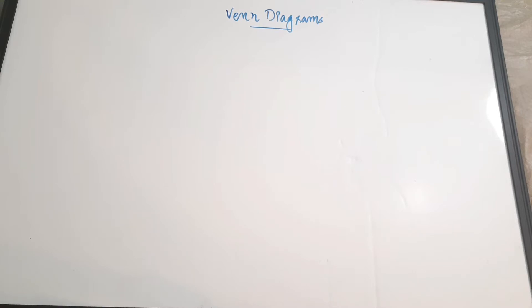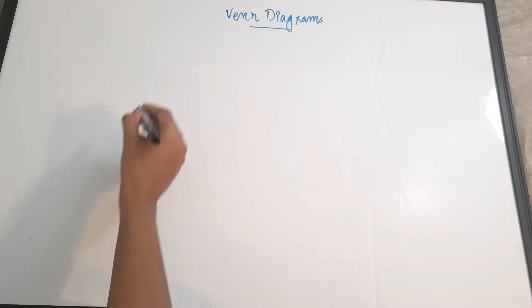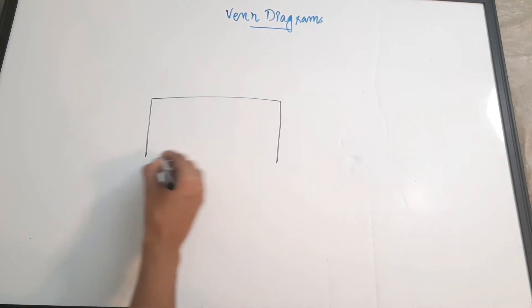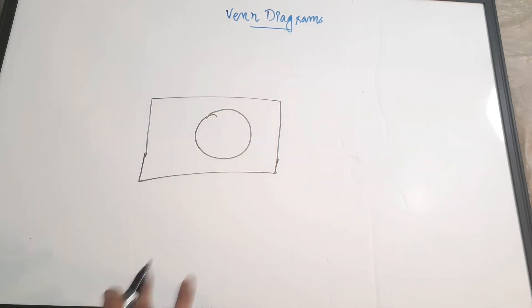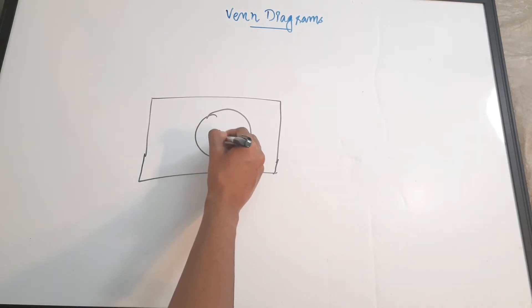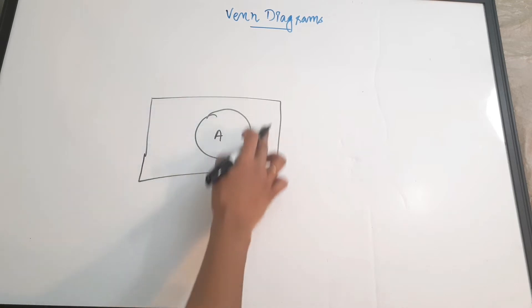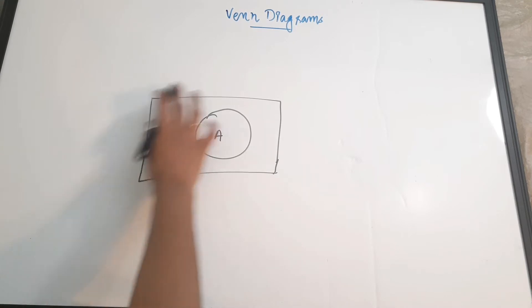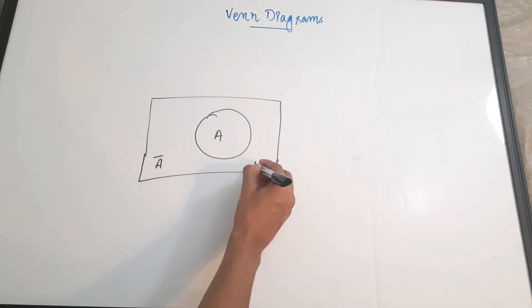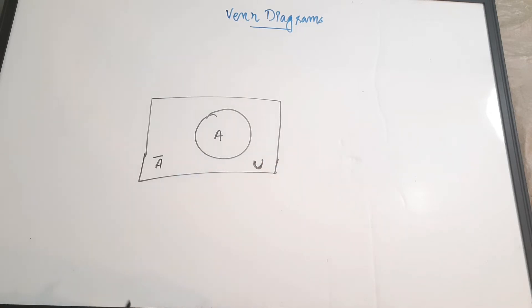Let us see some basics about Venn Diagrams. I am going to draw one - it will generally be in the form of circles. If you draw a square and then a circle inside it, that type of diagram is called a Venn Diagram. If this circle represents the variable A, the portion outside A is called A complement. Together, A and A complement form the universal set, called U, which is the combination of all the subsets.